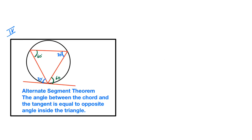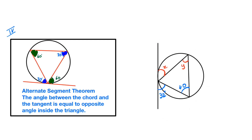The fourth circle theorem is the alternate segment theorem. The angle between the chord and the tangent is equal to the opposite angle inside the triangle. So this angle is equal to this, and this angle is equal to this angle. Whenever you are asked to give the reason, you will say the alternate segment theorem. In this example we have been given two angles — 32 and 40 — and we need to find x and y. Using the alternate segment theorem: y is 32 as it is opposite the angle 32, and x is 40.